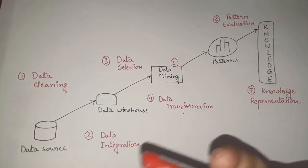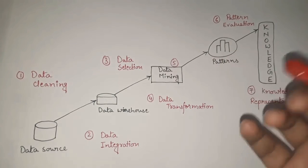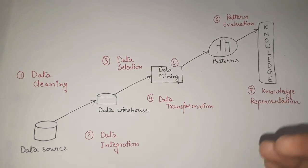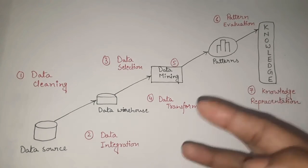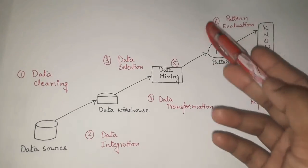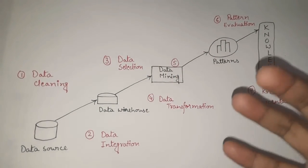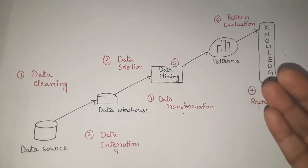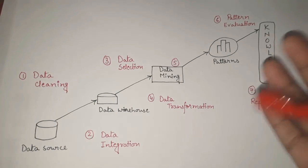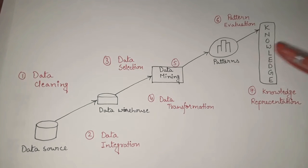After getting patterns from the data, we do the sixth step: Pattern Evaluation. Pattern evaluation means evaluating — that is, observing — the pattern we received, finding out what the pattern says or suggests, how the data are related, and in what context they are related. By observing these patterns we come to a conclusion, and that conclusion gives us the specific knowledge we were looking for.